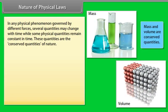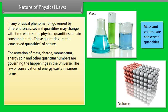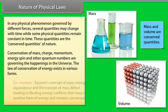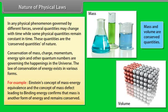Nature of physical laws. In any physical phenomenon governed by different forces, several qualities may change with time while some physical quantities remain constant in time. These quantities are the conserved quantities of nature. Conservation of mass, charge, momentum, energy, spin, and other quantum numbers are governing the happenings in the universe. The law of conservation of energy exists in various forms. For example, Einstein's concept of mass-energy equivalence and the concept of mass defect leading to binding energy confirms that mass is another form of energy and remains conserved.